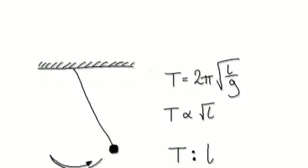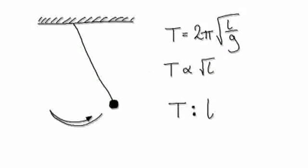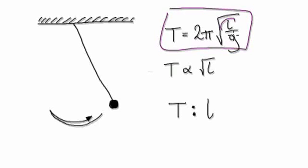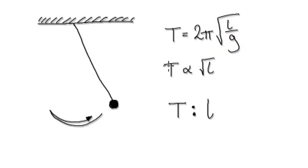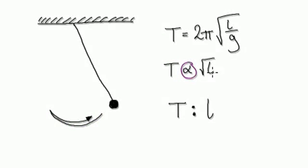Let's give you guys some more practice. The formula for a pendulum is given by T = 2π√(L/G), where L is the length of the string and G is gravity. We've already seen that the time it takes to do one swing, capital T, is proportional to the square root of the length of the string.